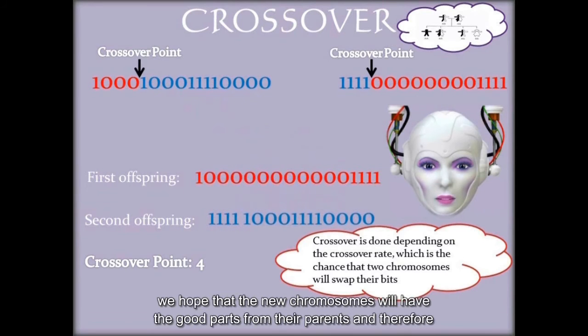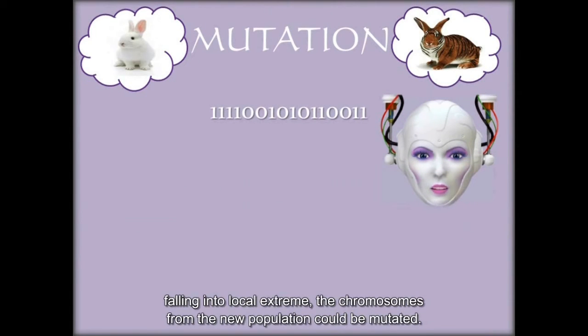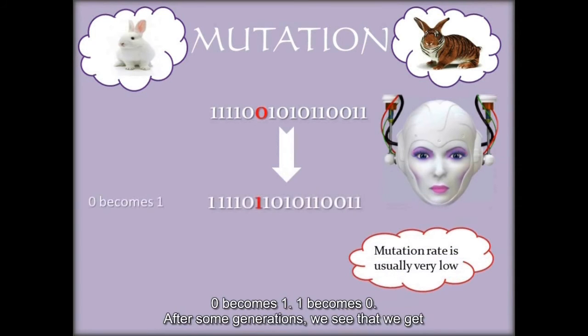With crossover we hope that the new chromosomes will have the good parts from their parents and therefore better solutions. In order to prevent genetic algorithm from falling into local extrema, the chromosomes from the new population could be mutated. Zero becomes one. One becomes zero.